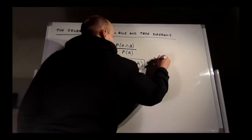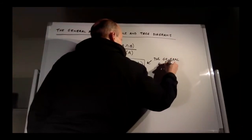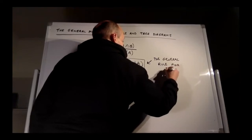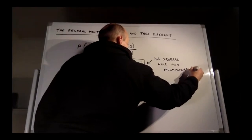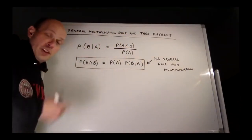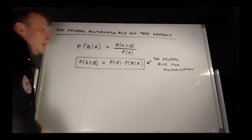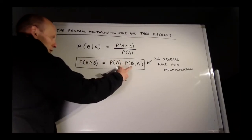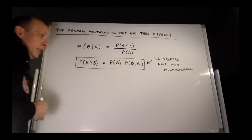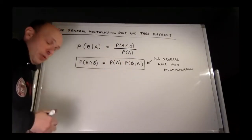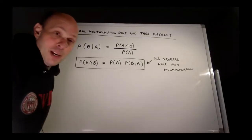This is the general rule for multiplication, and general rules are great because they always work. Just as the general addition rule always works, this general multiplication rule always works too. Since 'and' means multiply, if I want the probability of A and B, it's the probability of A times the probability of B given A. We'll use this formula today along with tree diagrams.